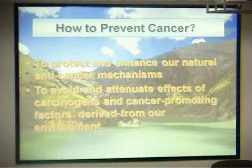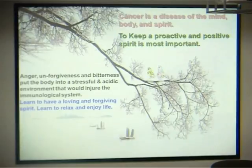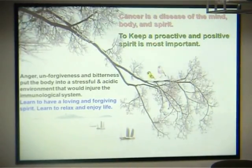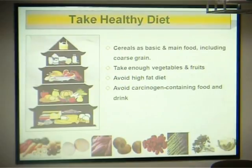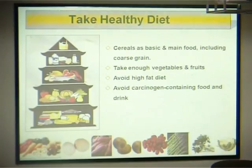How to prevent cancer? Cancer is a disease of the mind, body, and spirit, so making a proactive and positive spirit is most important. Also, take a healthy diet. At the base is cereals, which should be the main food, including coarse grains. Take enough vegetables and fruits. Avoid high-fat diet — breast cancer and pancreatic cancer are associated with high-fat diet.